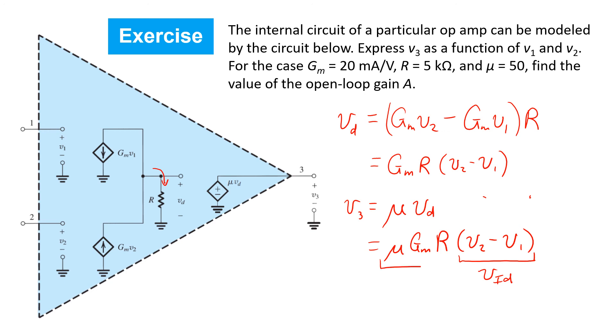Therefore, the gain A is given by the product of these two terms. So if, as in this exercise, gm equals 20 milliamps per volt, r is 5 kilo ohms, and mu is 50 volts per volt, you can take their product and we'll find that A is a gain of 5000 volts per volt.